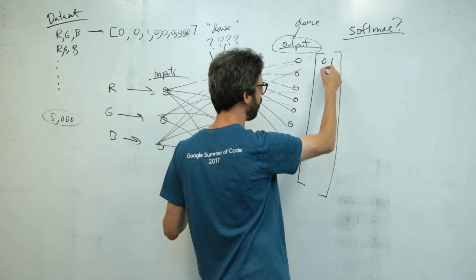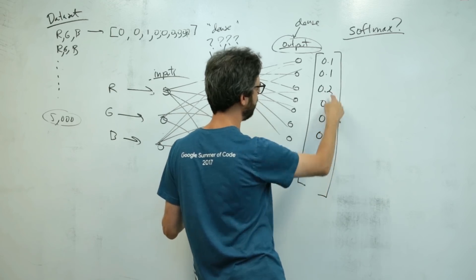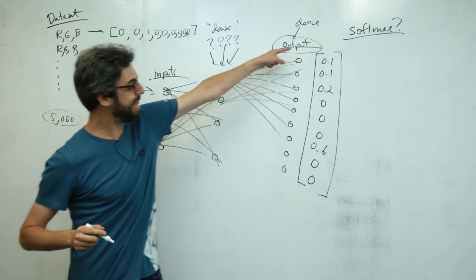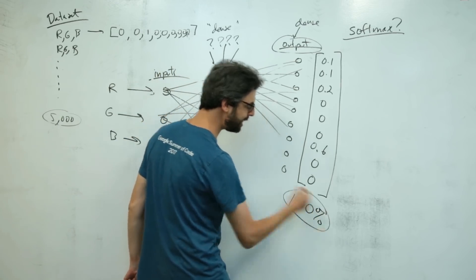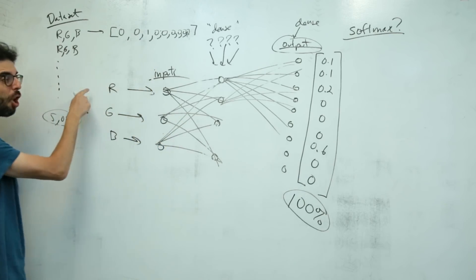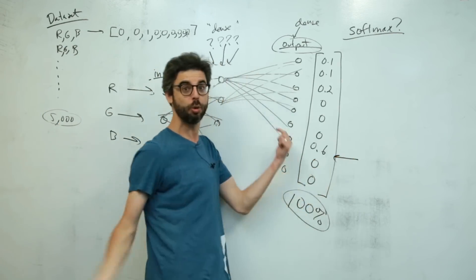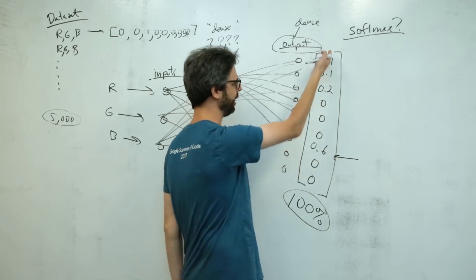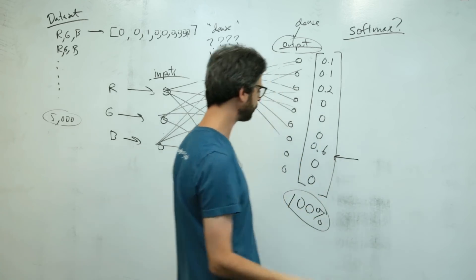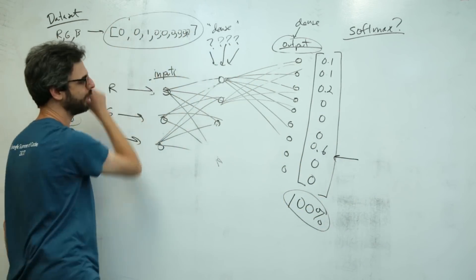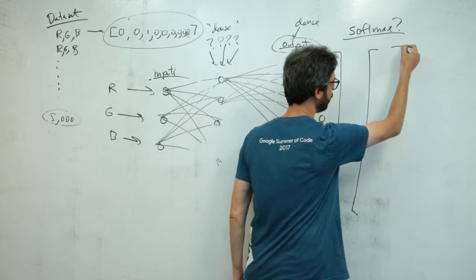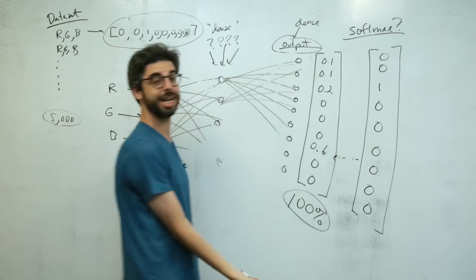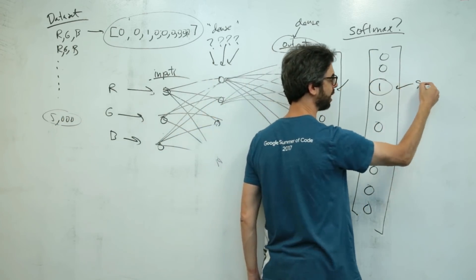It might look like this — there are nine values: 0.1, 0.1, 0.2, 0, 0, 0, 0, 0.6, 0 — these all add up to 100%. This particular RGB color has a 60% chance of being bluish at index number 6, a 10% chance of being reddish, a 10% chance of being purplish, and a 2% chance of being greenish. This is what we want. The training data is encoded as a one-hot encoded vector — 0, 0, 1, 0, 0, 0, 0, 0, 0 — because the correct label for that color is greenish.